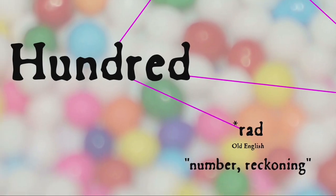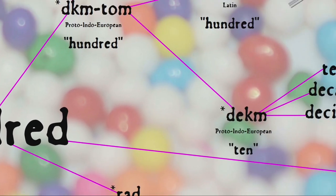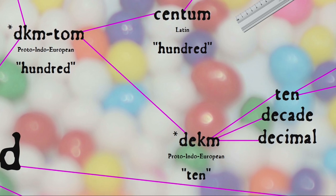The 'red' part of hundred, by the way, means number or reckoning, so hundred literally means 'the number hundred.' But the 'hund' part itself has two components. The first part means ten and gives us both the word ten and words such as decade and decimal, and then it has a suffix on the end which raises it from ten to hundred.